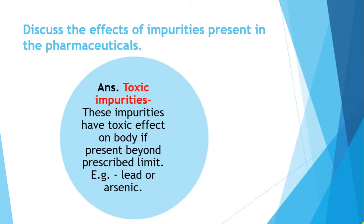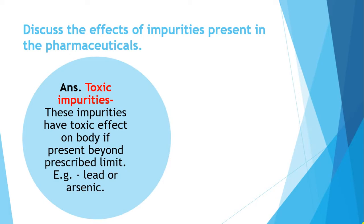Toxic impurities are hazardous impurities — they cause a toxic effect on the body if present beyond the prescribed limit. If something is taken in a limited quantity then it is okay, but if you go beyond that limit, it becomes harmful.